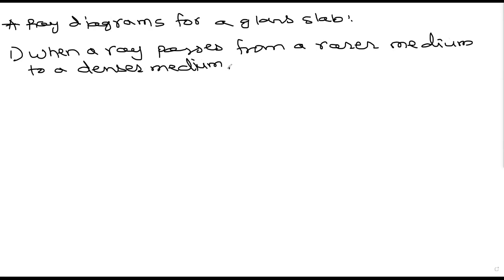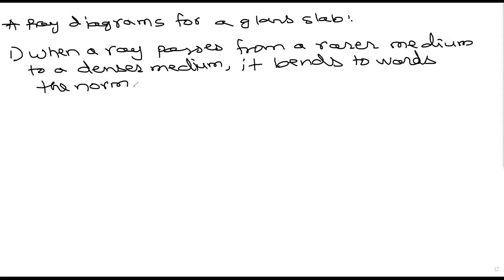...it bends towards the normal. Why? Because the speed of light in the rarer medium is more than the speed of light in the denser medium. These are optical densities — although oil is lighter than water and floats on water, oil is optically denser than water.